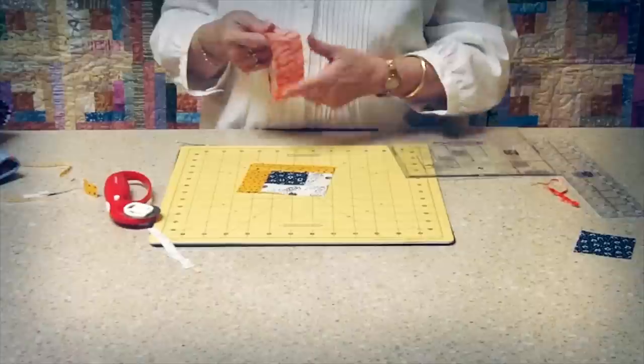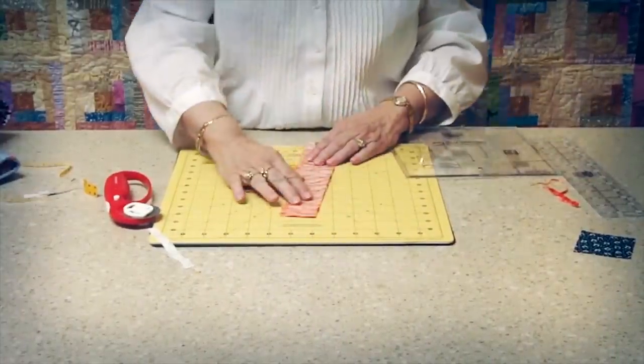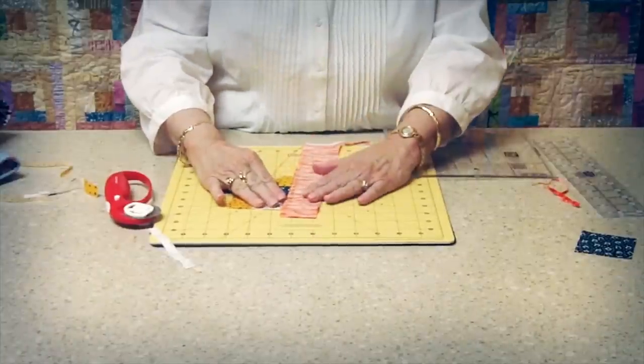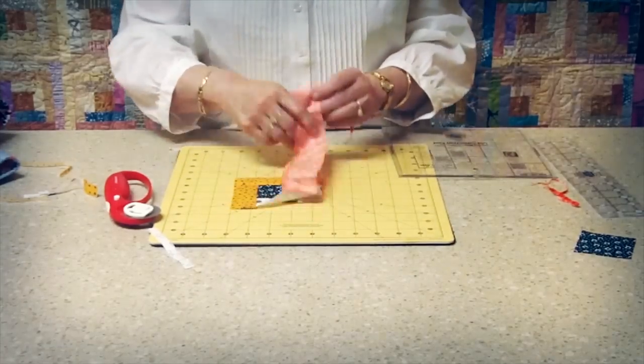Now when I add my second strip I only have to line the side that is rotary cut up against the edge of the strip. And it can overlap a little bit because that will be trimmed later. And again you can pin in place or not as you prefer.